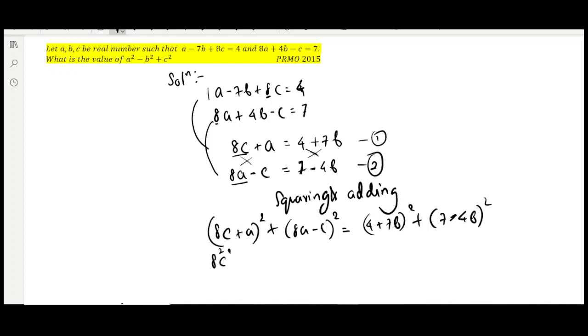So 8 square c square plus 2 times 8c times a plus a square equals 4 square plus 2 times 4 times 7b plus 7 square b square. And 8 square a square minus 2 times 8a times c plus c square equals 7 square minus 2 times 7 times 4b plus 4 square b square.